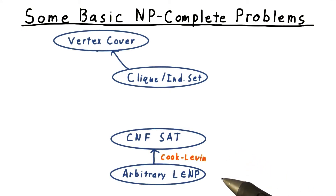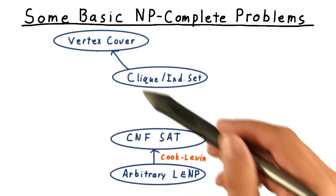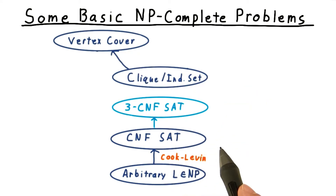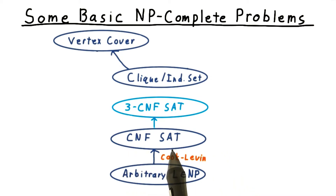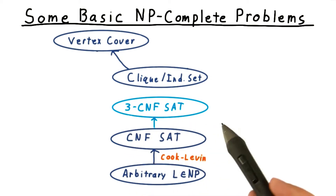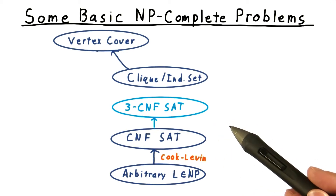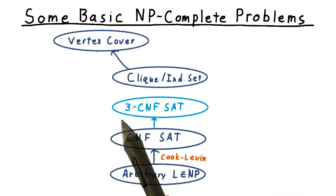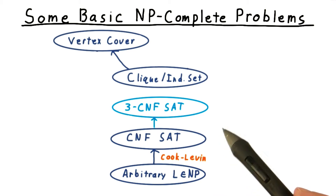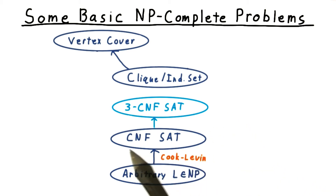Much of the lesson will be concerned with connecting up these two links into a chain. First, we're going to reduce general CNFSat to 3CNFSat, where each clause has exactly three literals. This is a critical reduction, because 3Sat is much easier to reduce to other problems than general CNFSat.